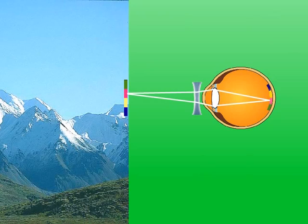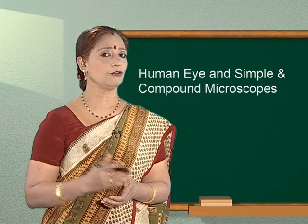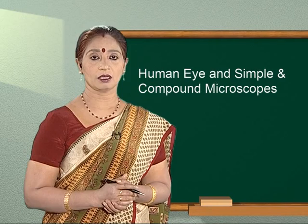Let us now learn to calculate the focal length of the concave lens desired by a myopic person. Let X be the distance of the far point of the myopic eye, and F be the focal length of the concave lens to be used.